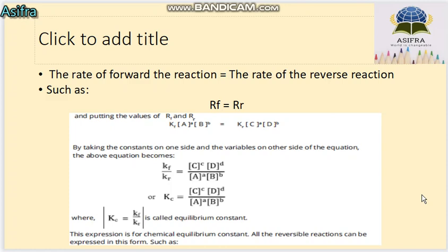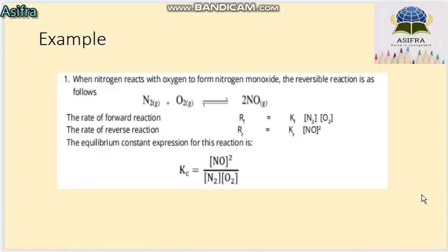If a question comes in an exam asking you to state the Law of Mass Action and derive the equilibrium constant for a general reaction, you should write the general reaction where number of moles are mentioned as powers, write the statement of the Law of Mass Action, and then derive the equilibrium constant expression from it.